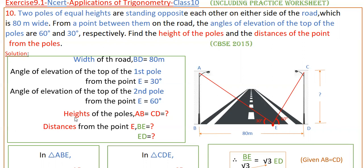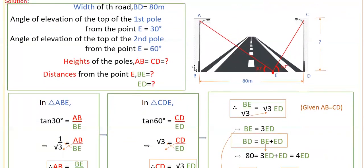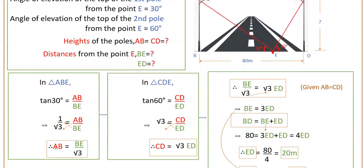We have to find the heights AB and CD (which are equal since the poles are of equal height) and the distances BE and ED. In triangle ABE, we take the trigonometric ratio tan 30 degrees, which equals opposite over adjacent, that is AB divided by BE. Since tan 30° = 1/√3, we get AB = BE/√3.